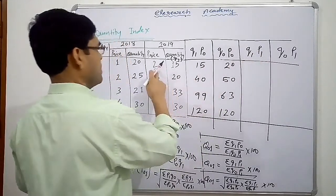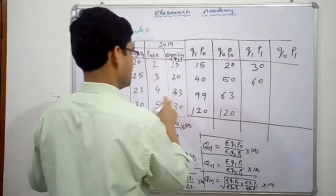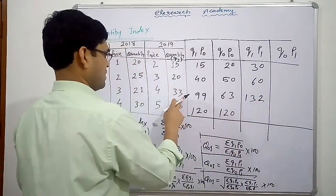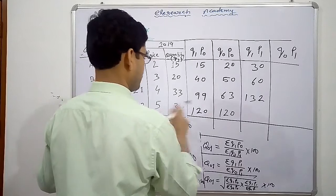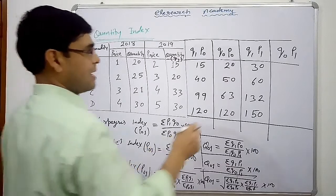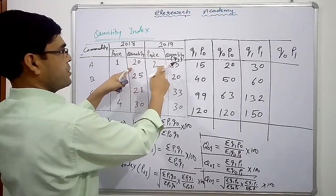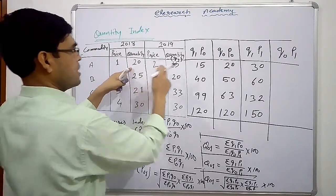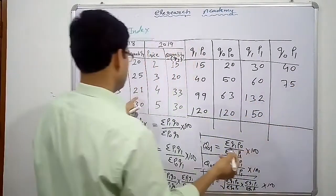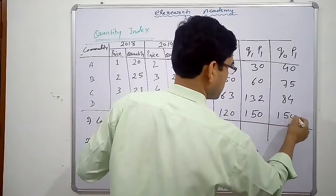Next, Q1 P1 — current year quantity into current year price: 15 into 2 equals 30, 20 into 3 equals 60, 33 into 4 equals 132, and 30 into 5 equals 150. Last column, Q0 P1 — base year quantity into current year price: 20 into 2 equals 40, 25 into 3 equals 75, 21 into 4 equals 84, and 30 into 5 equals 150.